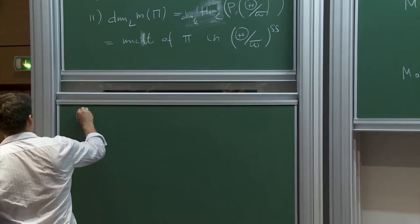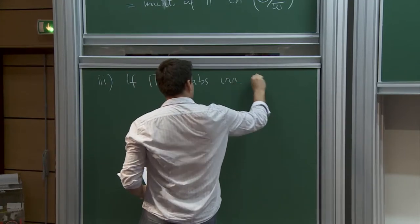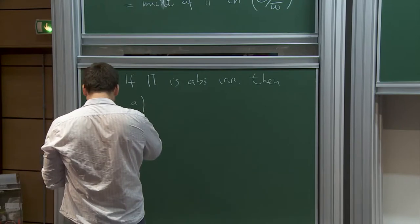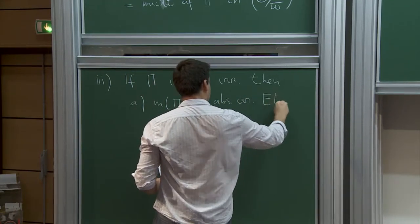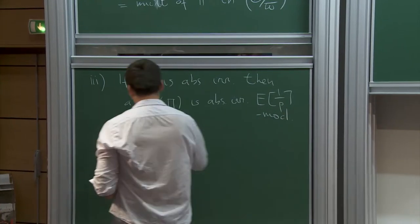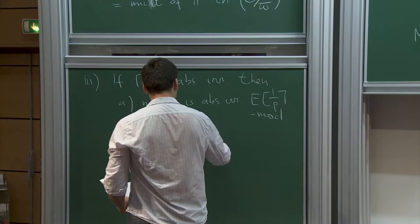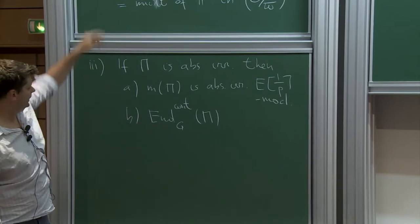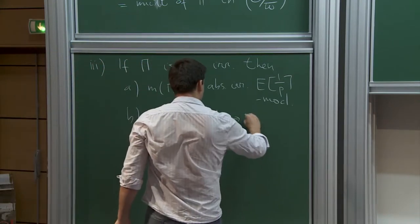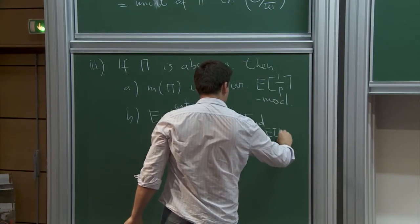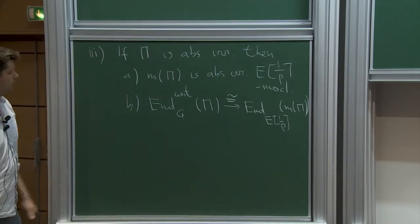Part (3): if π is absolutely irreducible, then (a) M(π) is an absolutely irreducible E[1/p]-module; and (b) the natural map End_G^cont(π) → End_{E[1/p]}(M(π)) is an isomorphism. The proof works essentially as for finite groups — you just look at the proof in Serre's book on representation theory of finite groups, and exactly the same argument works, except that to deal with issues of duals and p-adic functional analysis you use a paper of Schneider and Teitelbaum.